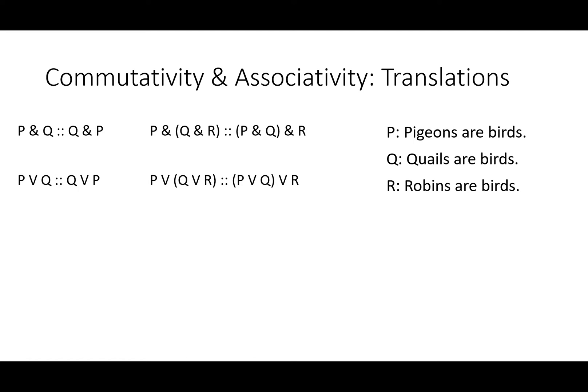Let's see some translations. Let's put in pigeons are birds, quails are birds, robins are birds for P, Q, and R. Pigeons and quails are birds, so quails and pigeons are birds, and vice versa. Either pigeons or quails or birds means the same as either quails or pigeons or birds. Pigeons are birds and quails and robins are birds is the same as pigeons and quails are birds and robins are birds. Pigeons are birds OR either quails or robins are birds is the same as either pigeons or quails are birds or robins are birds.